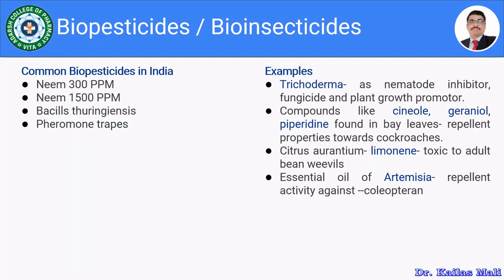Common biopesticides available in India include neem 300 ppm, neem 1500 ppm, Bacillus thuringiensis, and pheromone traps. Some examples of biopesticides include Trichoderma as a nematode inhibitor, fungicide, and plant growth promoter. Compounds like cineole, geraniol, and piperidine found in basil have repellent properties against cockroaches. Citrus aurantium, which comprises limonene, is effective against adult bean beetles. Essential oil of Artemisia has repellent activity against Coleoptera.